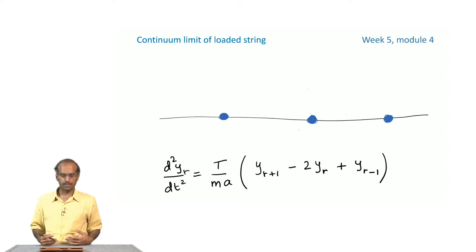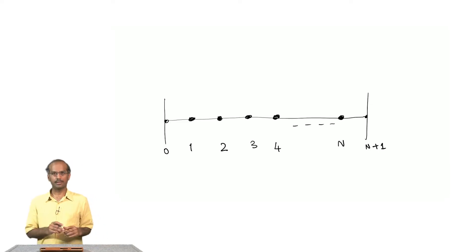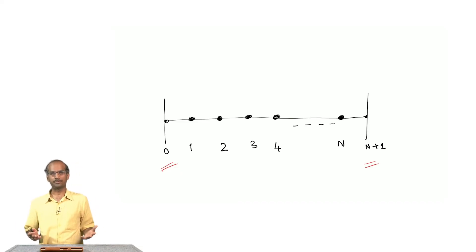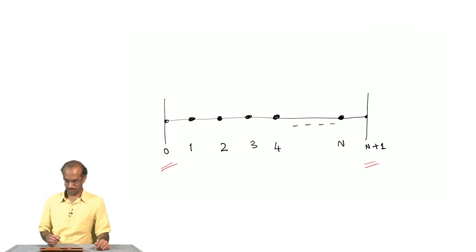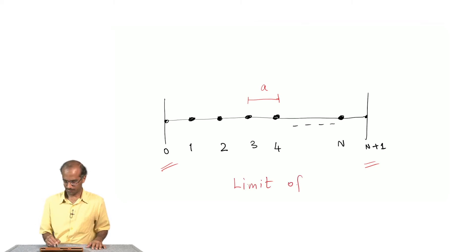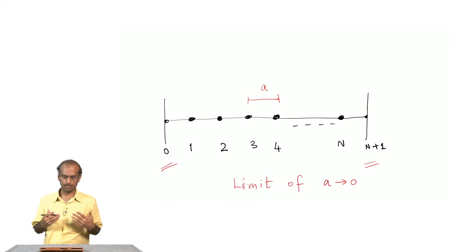Now we take the next step towards what is called the continuum limit. Here is the canonical example: n particles in a string with boundary conditions that the particle at position 0 and the one at position n+1 have zero amplitude at all times — they do not oscillate. When I say I am going to take the continuum limit, I mean that the distance between two particles, which we called a, will be taken to the limit a → 0, so the particles come closer and closer together and essentially form a continuous string.